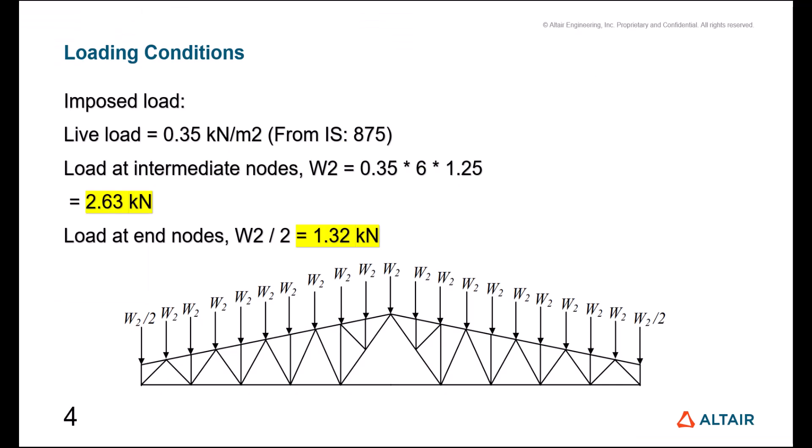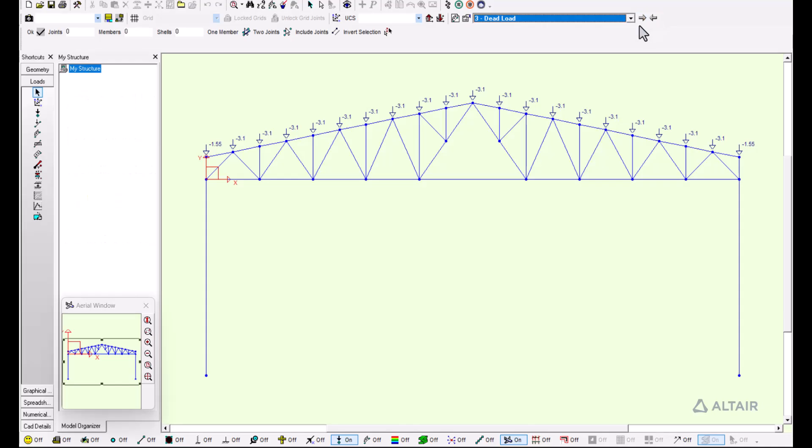Now for the live load, we have an imposed load and we're going to take this coefficient of 0.35 kilonewtons per square meter from IS875. We calculate the load at the intermediate nodes, W2, which gives us 2.63 kilonewtons, and at the end nodes, 1.32 kilonewtons. We have also represented this as a live load in the program.